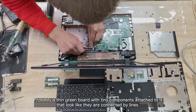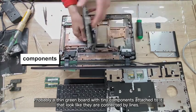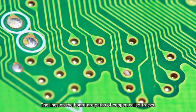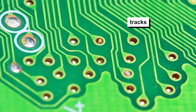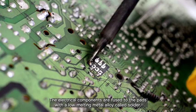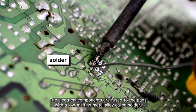Probably a thin green board with tiny components attached to it that look like they are connected by lines. That's a printed circuit board. The lines on the board are paths of copper called tracks. They conduct electricity to copper pads. The electrical components are fused to the pads with a low melting metal alloy called solder.